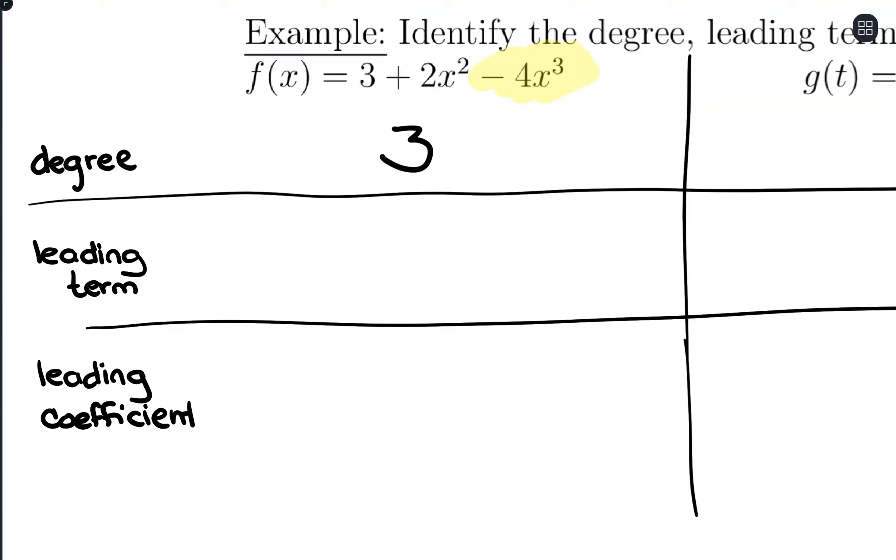Our leading term is that entire term of negative 4x cubed. The leading coefficient, because there are two pieces here—a number multiplying and then our variable with an exponent—is that number up front. In this case, it would be negative 4.